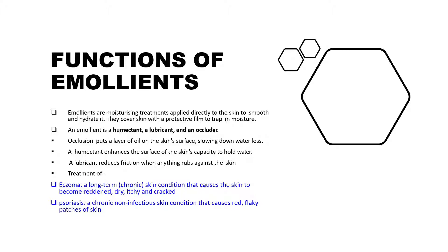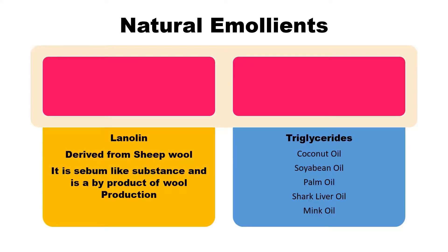So now we are clear about what emollients are and their functions. Next, let us classify emollients on the basis of two categories. First, on the basis of their sources: if they come from natural sources they are termed natural emollients, and if they are synthesized in the lab, they are termed synthetic emollients.